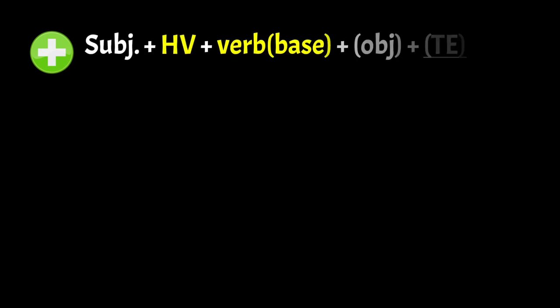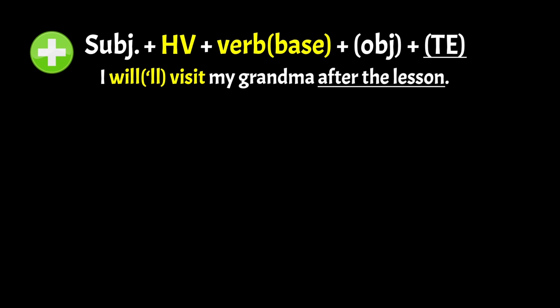Now we're going to take a look at how to make an affirmative sentence. First you need the subject, then you need the helping verb — in this case, will — then you need the base of the verb, then maybe the object, and then a time expression. Just like this example: I will visit my grandma after the lesson. Or contracted: I'll visit my grandma after the lesson.